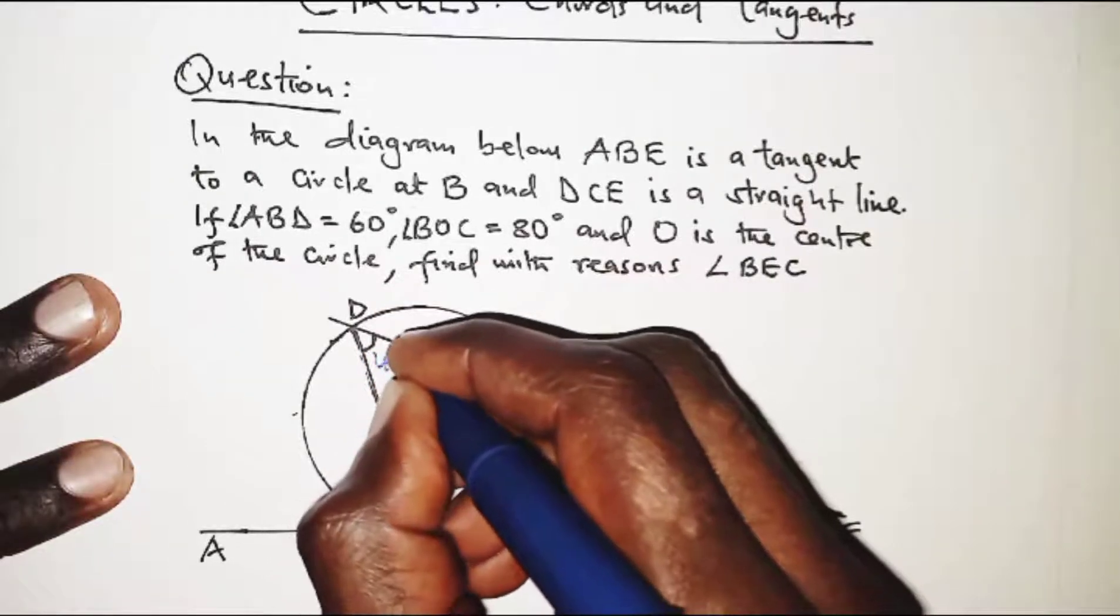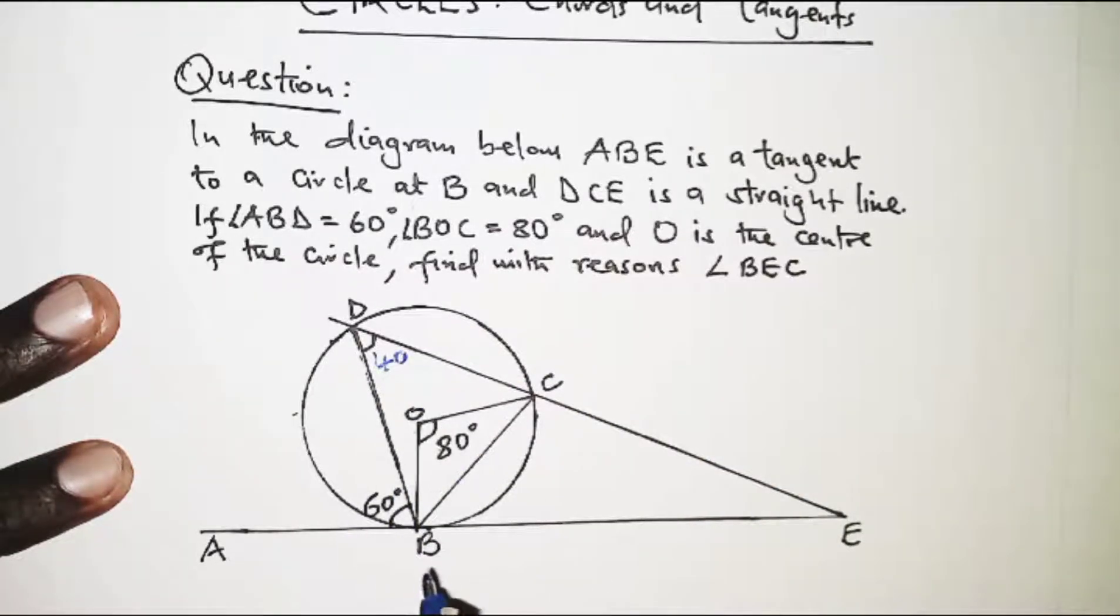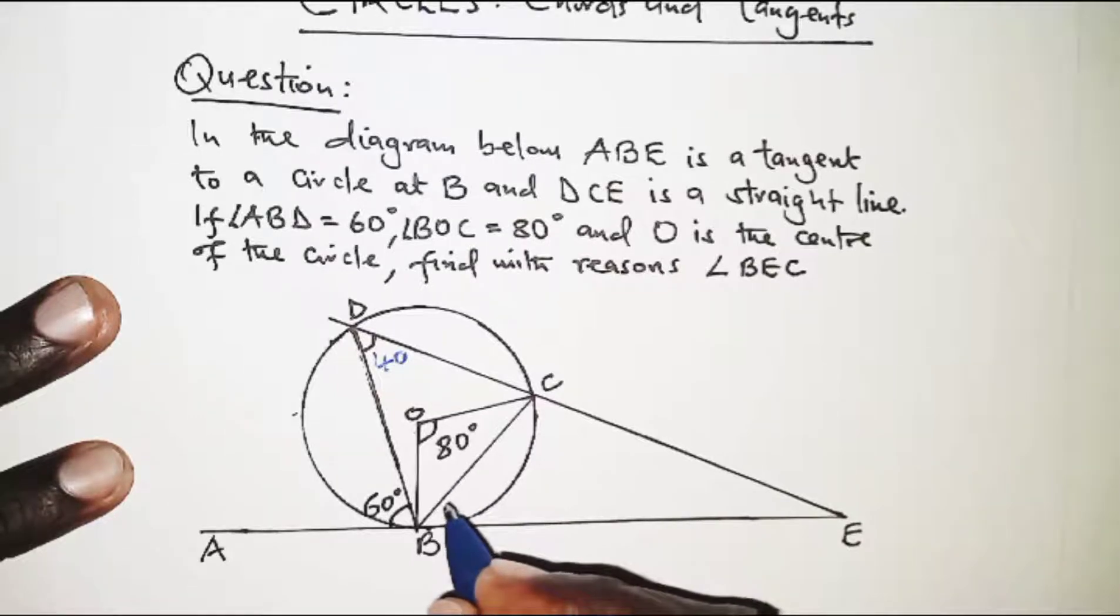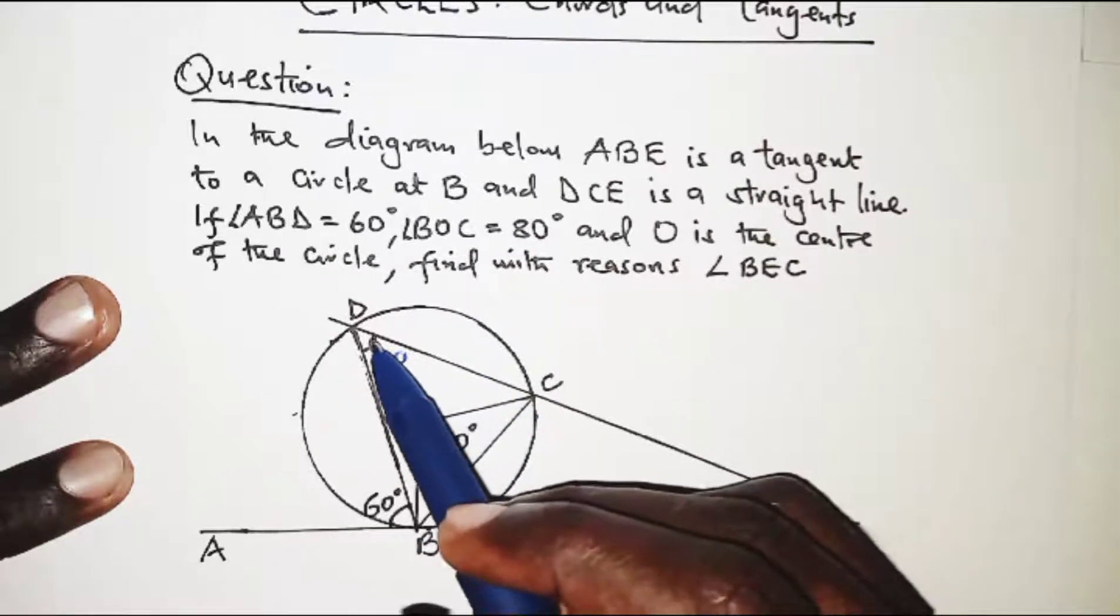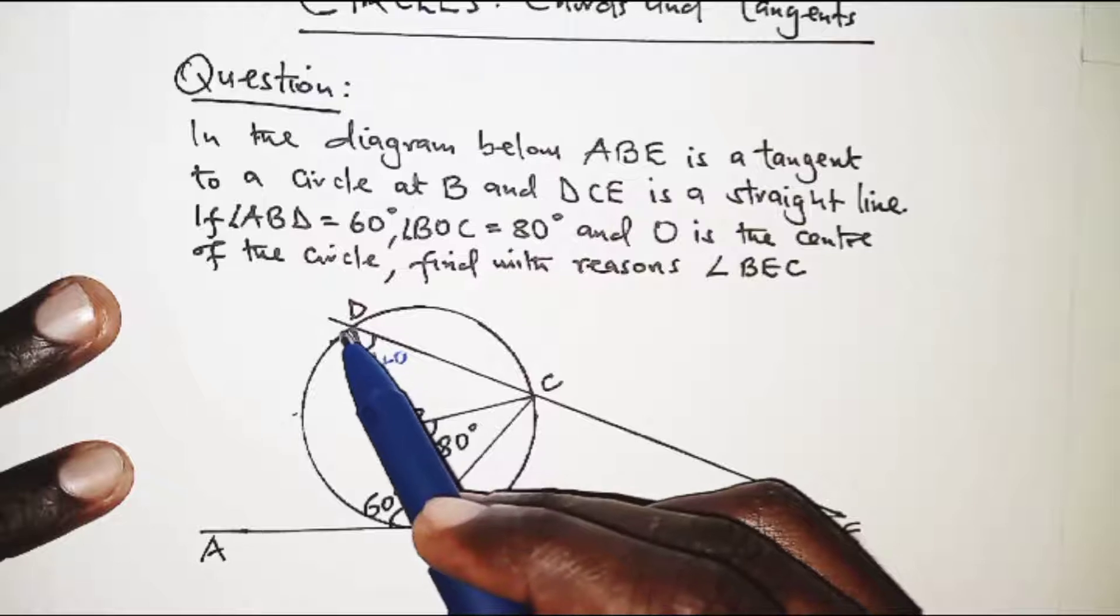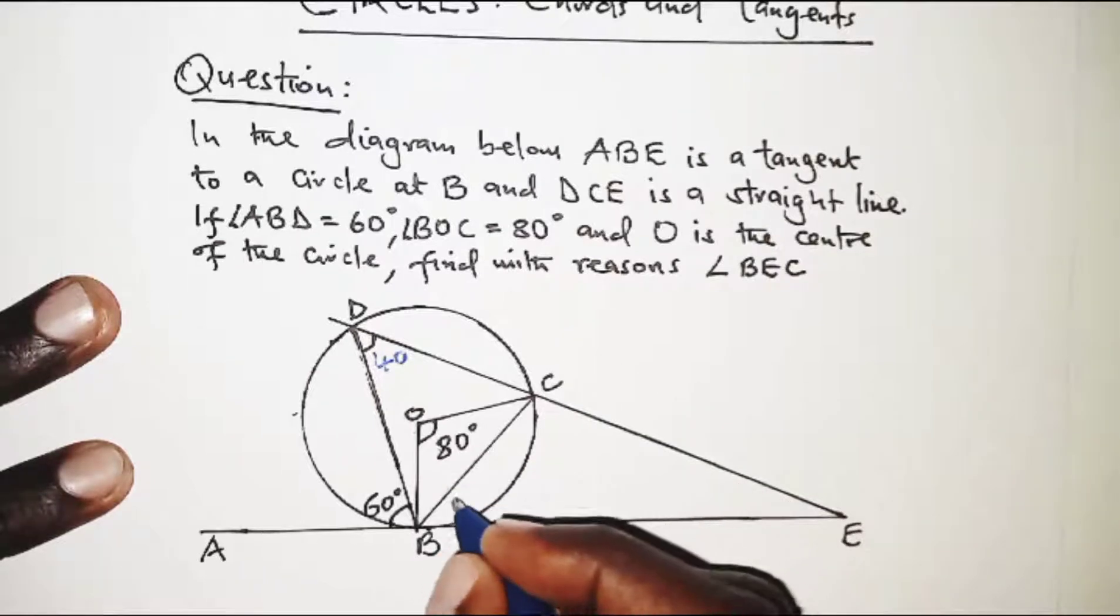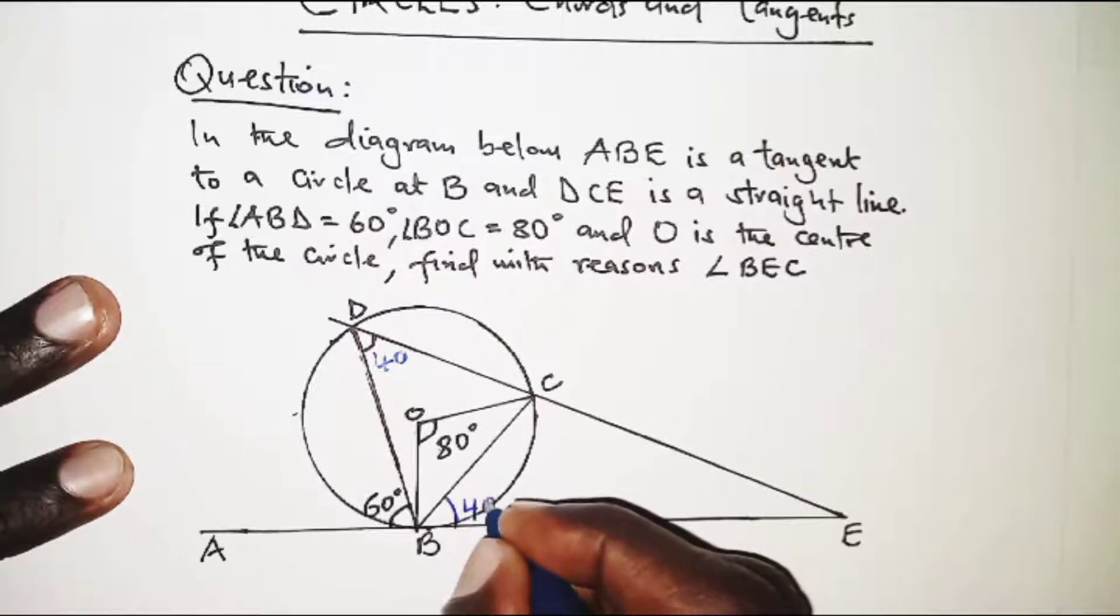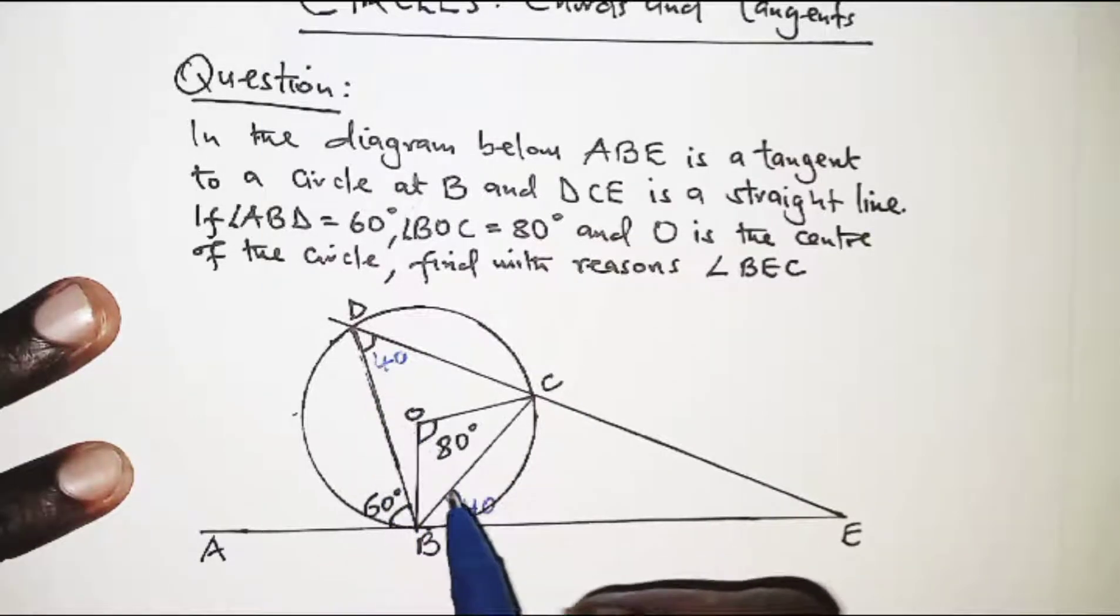So here we have 40. Next we are going to use the property that says angles in alternate segments are equal. We have BC subtending an angle of 40 degrees at point D, which is on the circumference. Then the same BC should make angle 40 with the tangent at point B. So here should be 40, and the property is angles in alternate segments are equal.